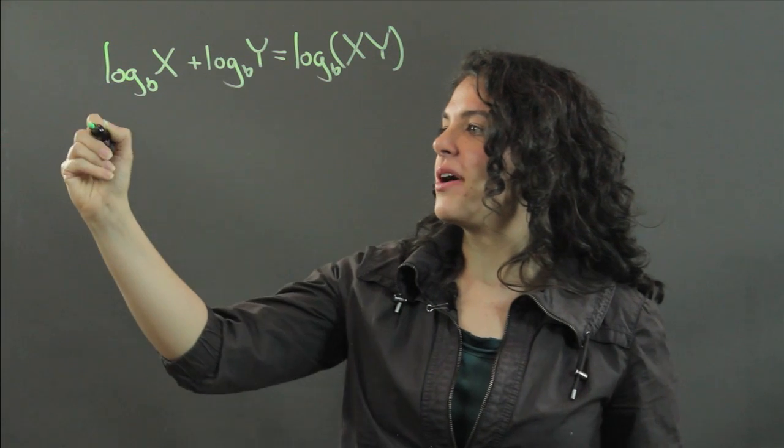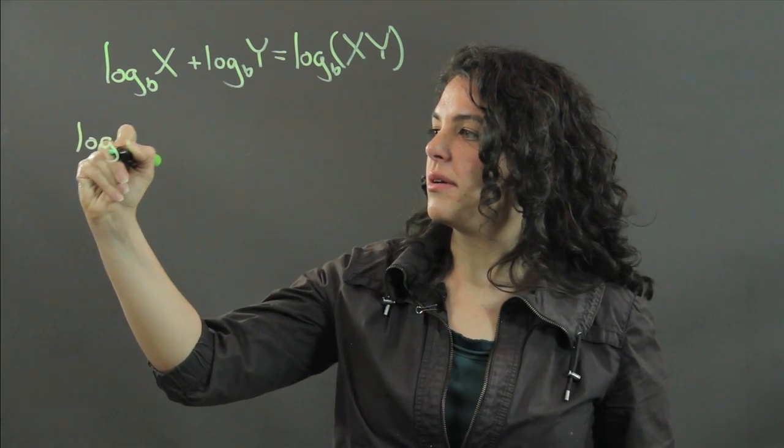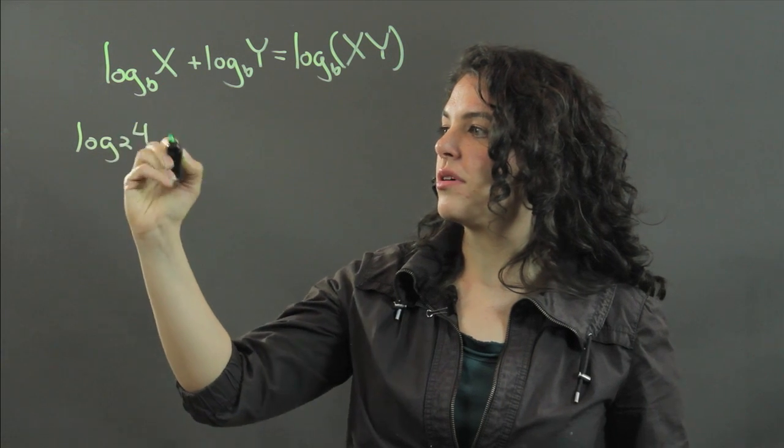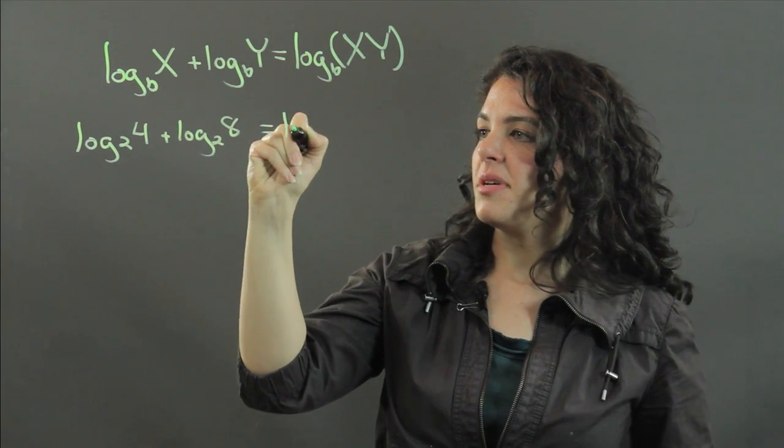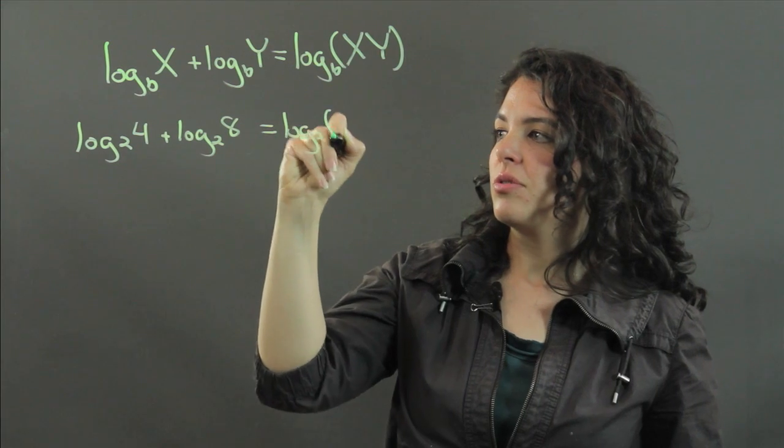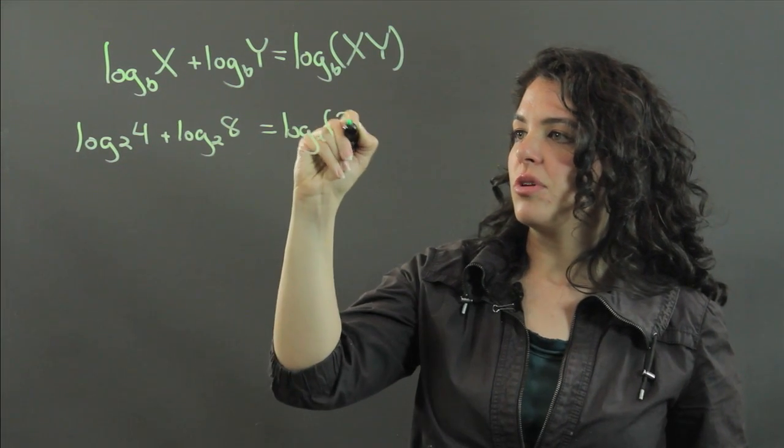Let's do a quick example. If I had log base 2 of 4 plus the log base 2 of 8, that would be equal to the log base 2 of 4 times 8, which is 32.